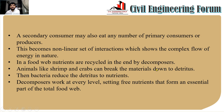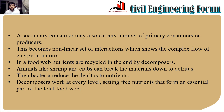Animals like shrimp and crabs can break dead and decaying materials down into detritus — small debris — and then bacteria reduce the detritus into nutrients. Decomposers work at every level, setting free nutrients that form an essential part of the total food web. If any portion of the food web or food chain breaks due to changing temperatures or other environmental conditions, the entire cycle could break and the food web may change.